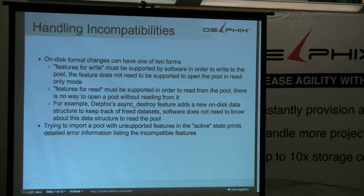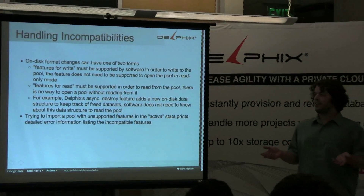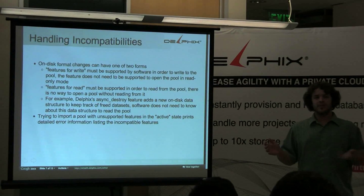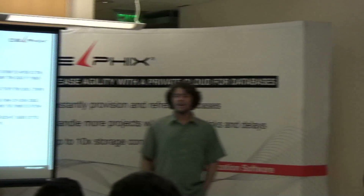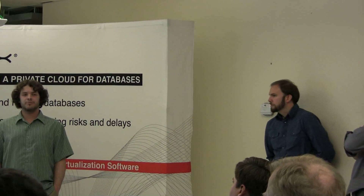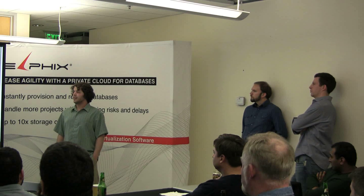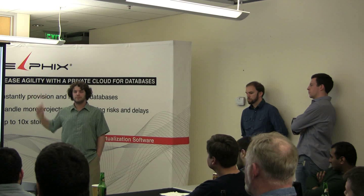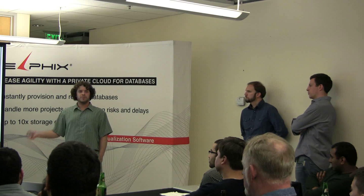What happens when you try to open an incompatible pool? There are two types of features. Some features — like once you've created a RAID-Z vdev — older versions simply can't do anything with the pool at all. But there are also features where you can still read the pool just fine; there's extra information that you don't understand, but as long as you ignore it properly, there's no problem. Async destroy is one of these — there's extra metadata about cleaning up free blocks that needs to be stored, but it allows you to still open the pool read-only.